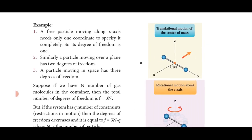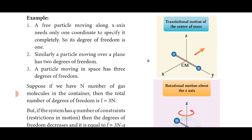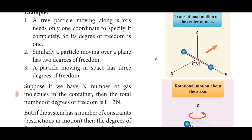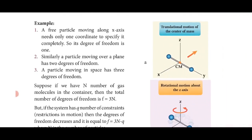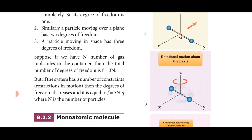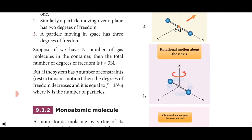With an example: a free particle moving along the x-axis needs only one coordinate. We know the three coordinate system: x, y, and z. If it is moving along only the x-axis, only one coordinate is needed to specify it completely — so the degree of freedom is one. Similarly, a particle moving over a plane has two degrees of freedom, and a particle moving in space has three degrees of freedom.